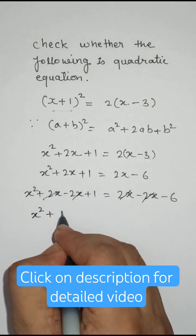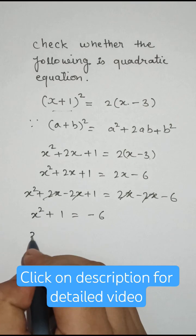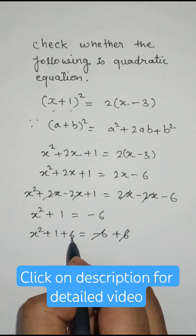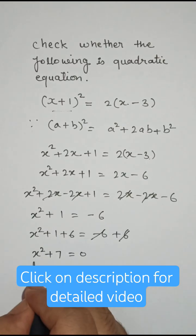This simplifies to x² + 1 = -6. Adding 6 to both sides: x² + 1 + 6 = -6 + 6, so x² + 7 = 0.